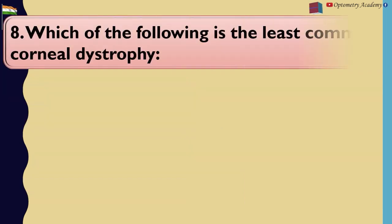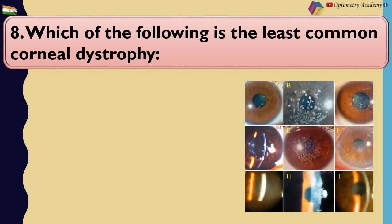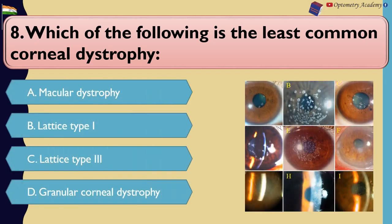Which of the following is the least common corneal dystrophy? A. Macular dystrophy. B. Lattice type I. C. Lattice type III. D. Granular corneal dystrophy.